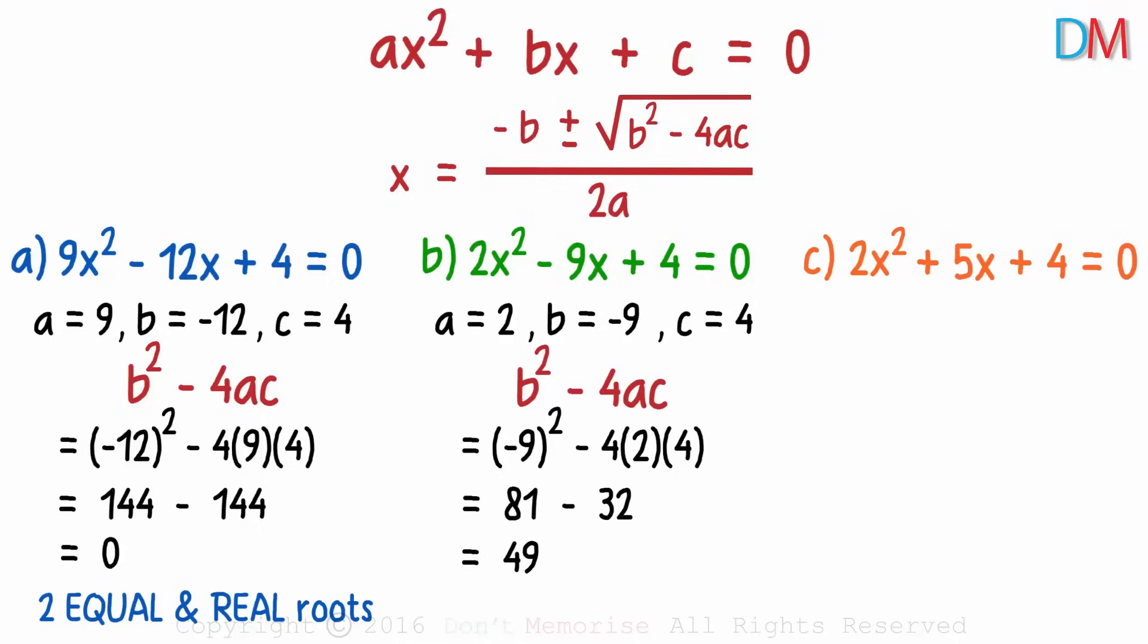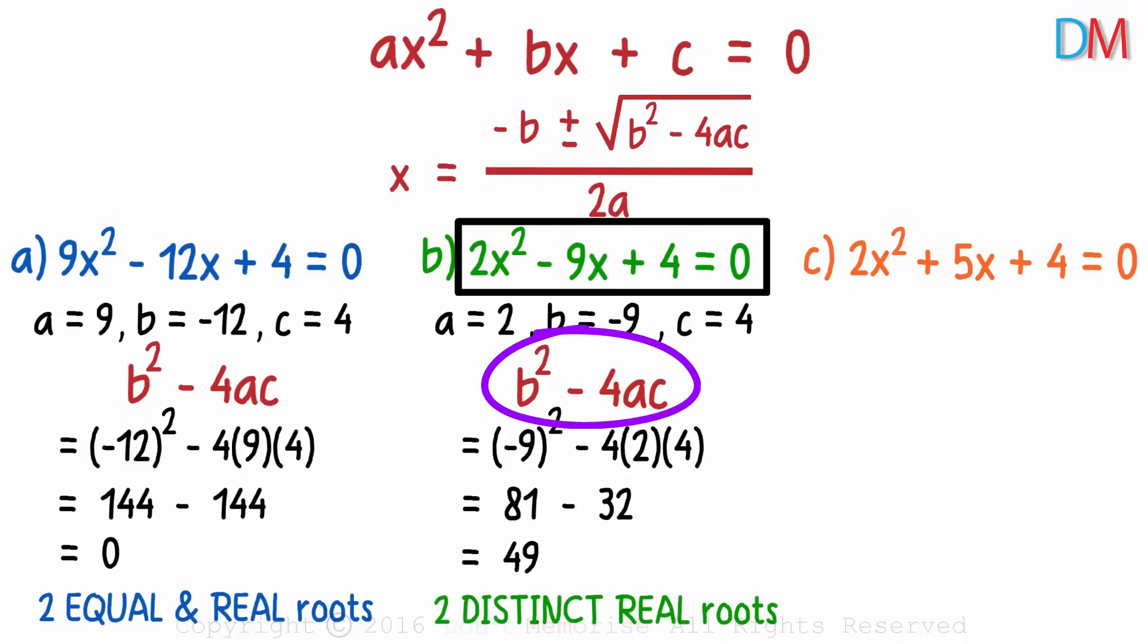It will equal 49 which is positive. This quadratic equation will have two distinct real roots as its discriminant is positive.